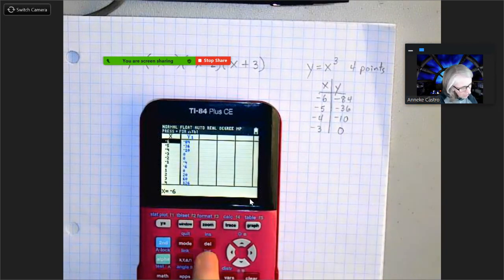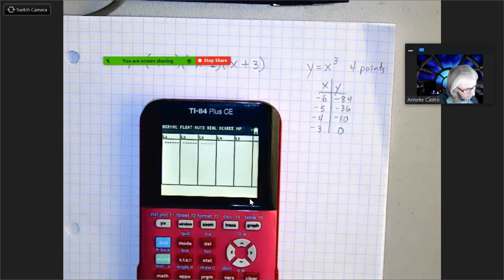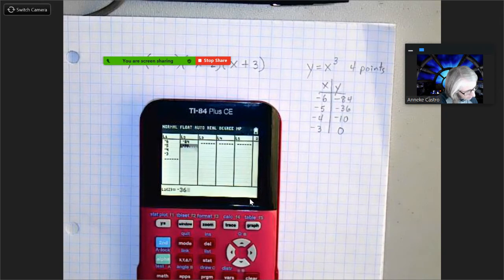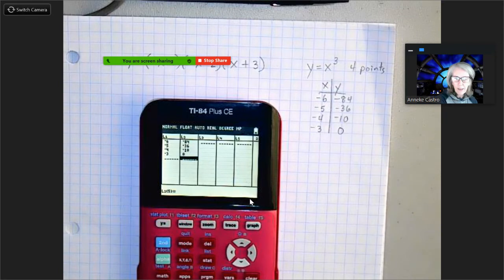I'm going to go over to stat edit and I'm going to type those in: negative six, negative five, negative four, negative three. And I'm going to go over to my y: negative 84, negative 36, negative 10, and zero.